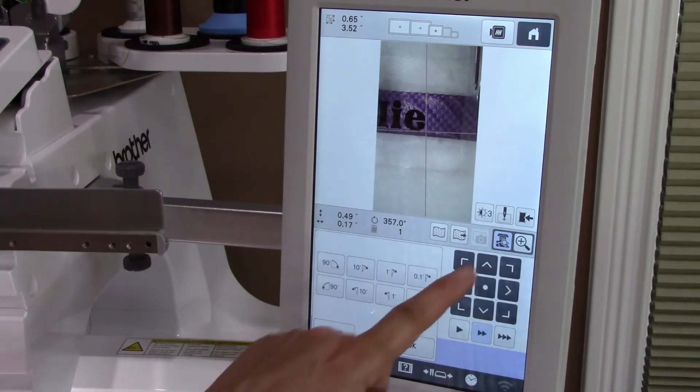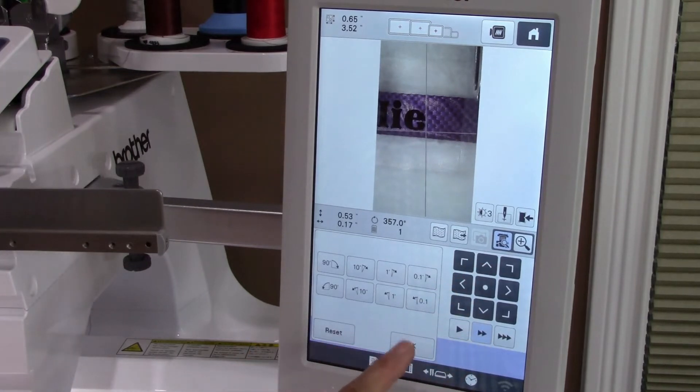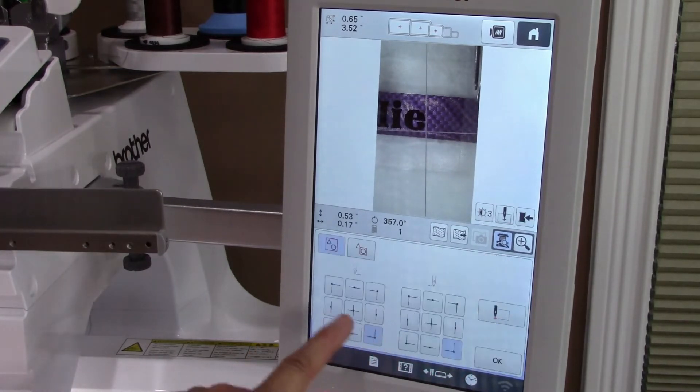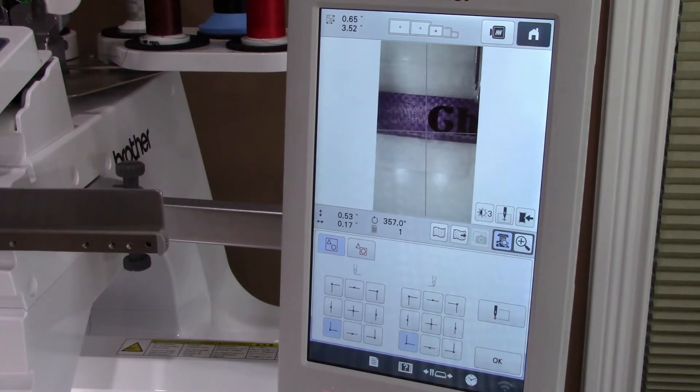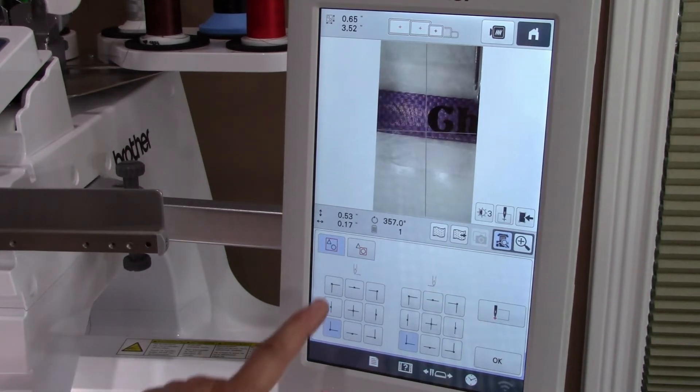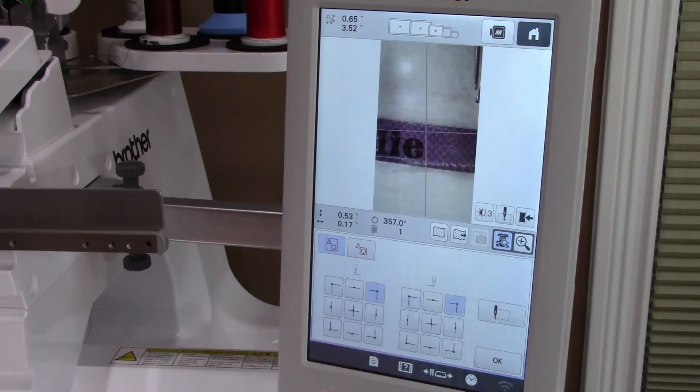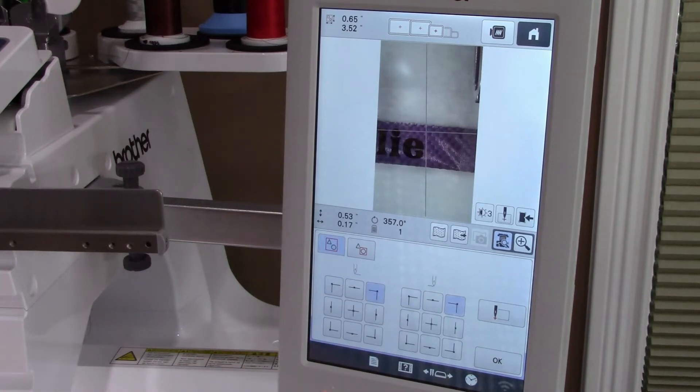In this case, I am rotating it just a tiny bit and making small adjustments. One more check of all four corners using the needle drop point tool.